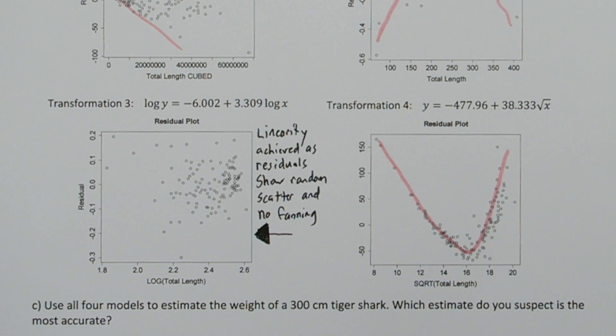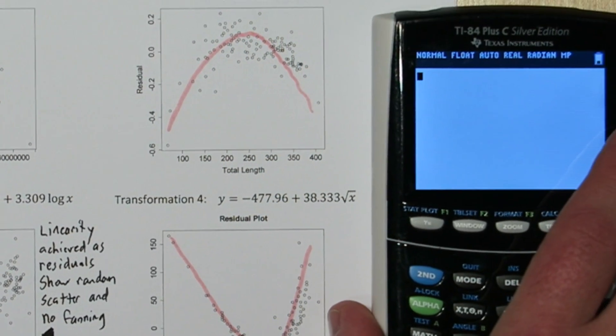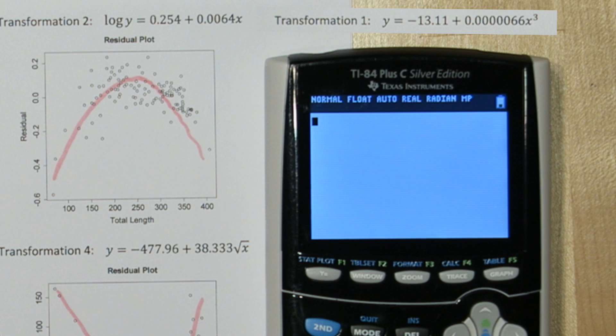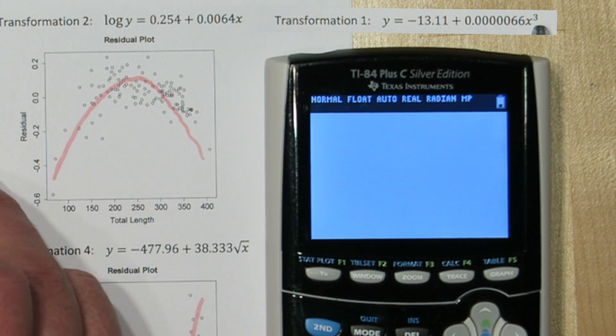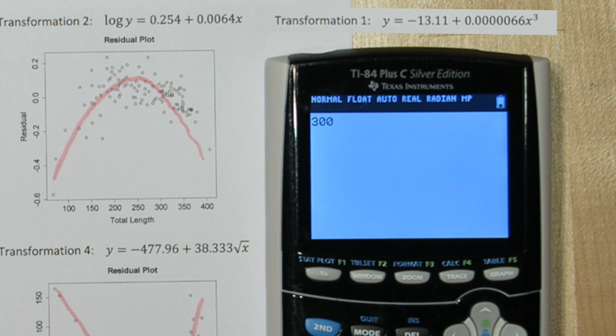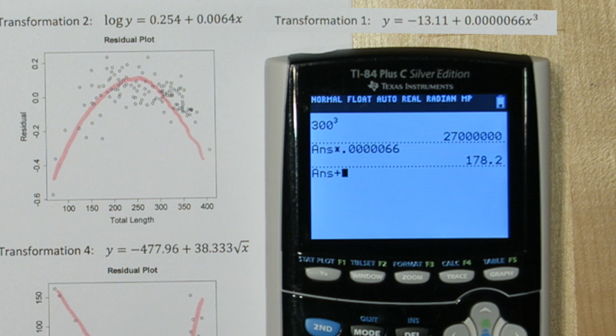Now we're going to use each of these transformations to predict the weight of a 300 cm shark. So on our first transformation, we need to substitute in 300 and then cube it. So we'll type 300 and we'll cube it. Now we need to multiply it by this coefficient. And finally, we have to add in our y-intercept. Alright, our prediction for transformation 1 is 165.09 kg.